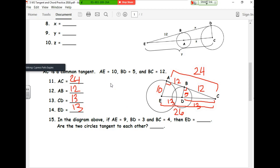You could have done 10 squared plus 24 squared. But remember, once again, you would not have gotten ED—you would have gotten EC. And then you subtract to get ED.